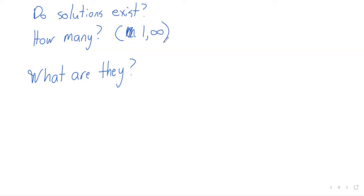We answered the third question first — we can find solutions using Gauss-Jordan elimination. The somewhat disappointing answer to the first two questions is that to know whether solutions exist or how many solutions there are, we have to row reduce. Essentially, to answer those questions, we do the work needed to find the solutions.